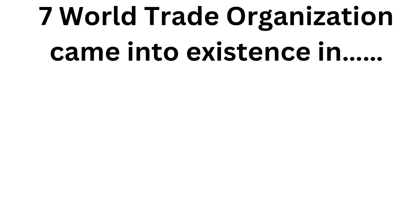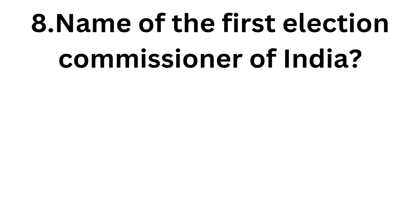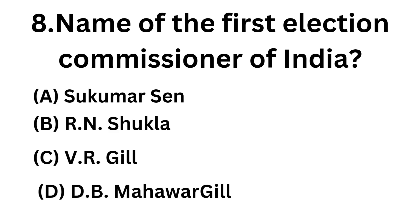The seventh question: the World Trade Organization came into existence in 1992, 1993, 1994, or 1995? The answer is 1995. The eighth question: name the first Election Commissioner of India. Options are: Sukumar Sen, Sukla, Gil, Mahwar Gil. The answer is Sukumar Sen.